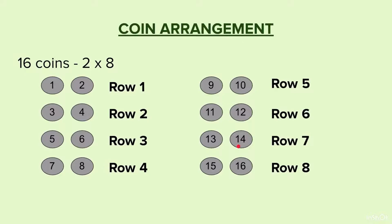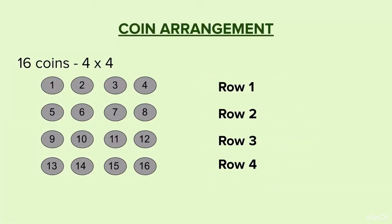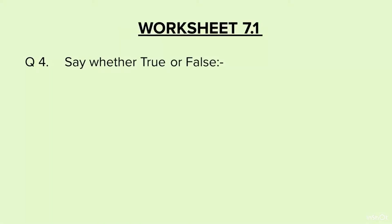Now I will show you the picture of how these coins will look when arranged in rows. For 2 × 8: that means 8 rows of 2 coins each. For 4 × 4: each row has 4 coins and there are 4 rows. This is how the coin arrangement is going to look like.